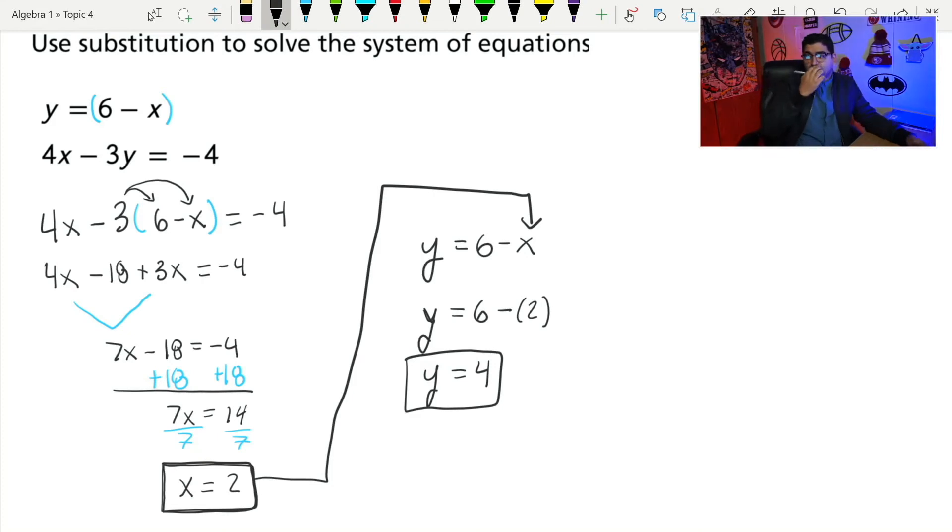And remember, the solution to a system of equations is the point where these two lines have in common. It's a lot of times the point where they cross. So I would write my answer as a point or as an ordered pair, which would be two comma four. The point two comma four is the only point that both of these lines share. And that's how we solve by using the substitution method.